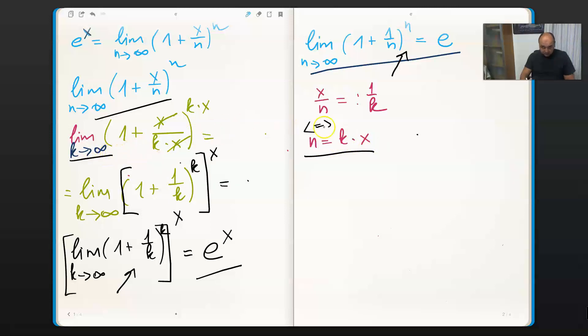So we are substituting right here. We are bringing instead of this n, k times x. As you can see, we are cancelling the x values. We have k to the power times k to the power of x instead of n right here.